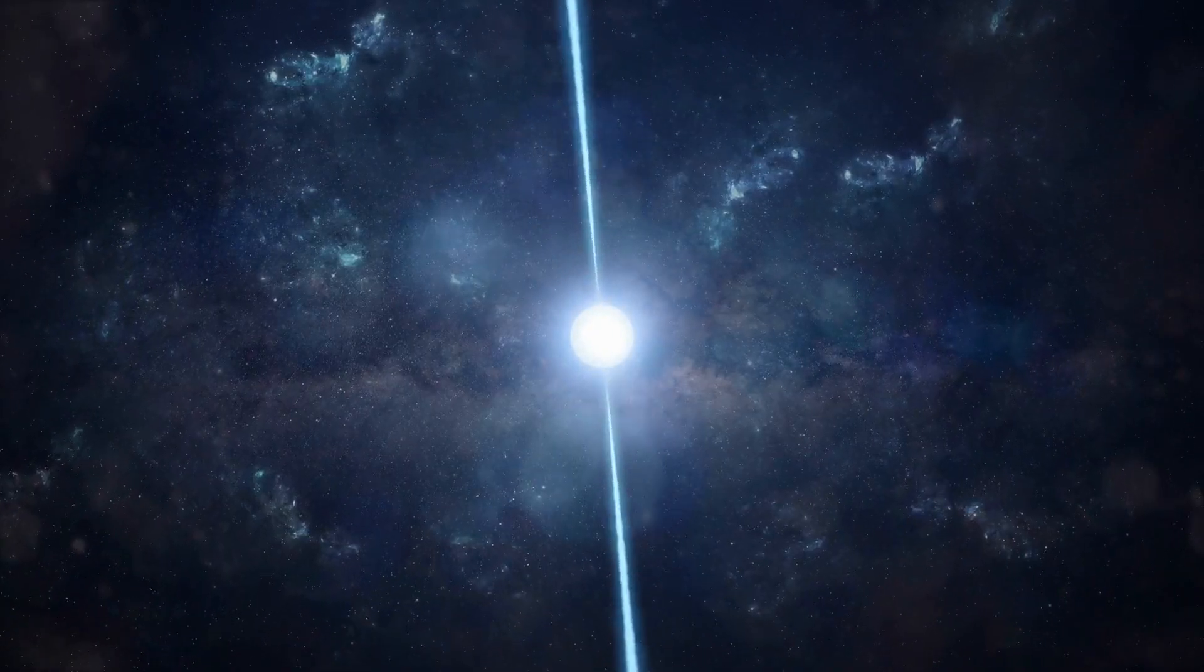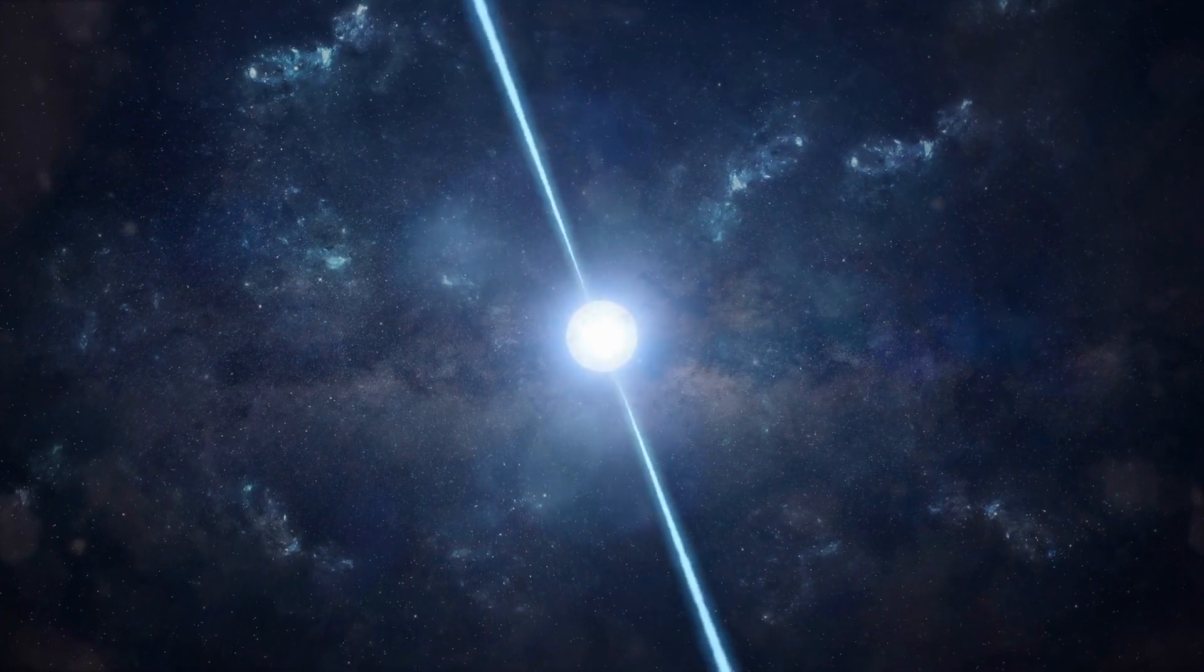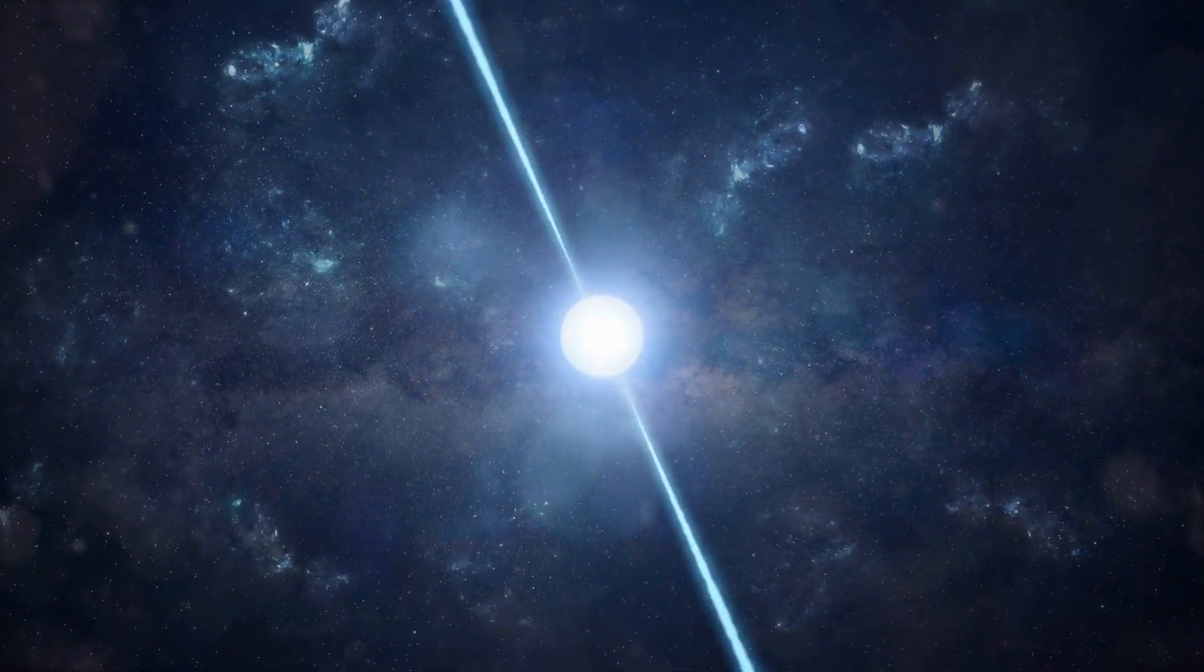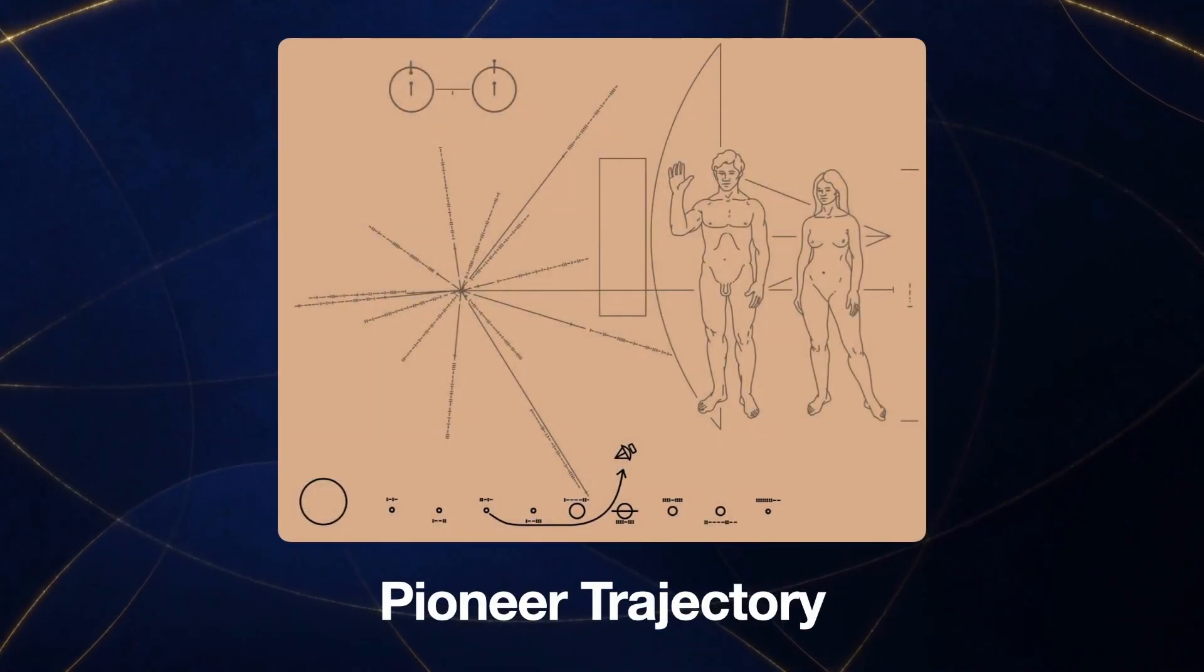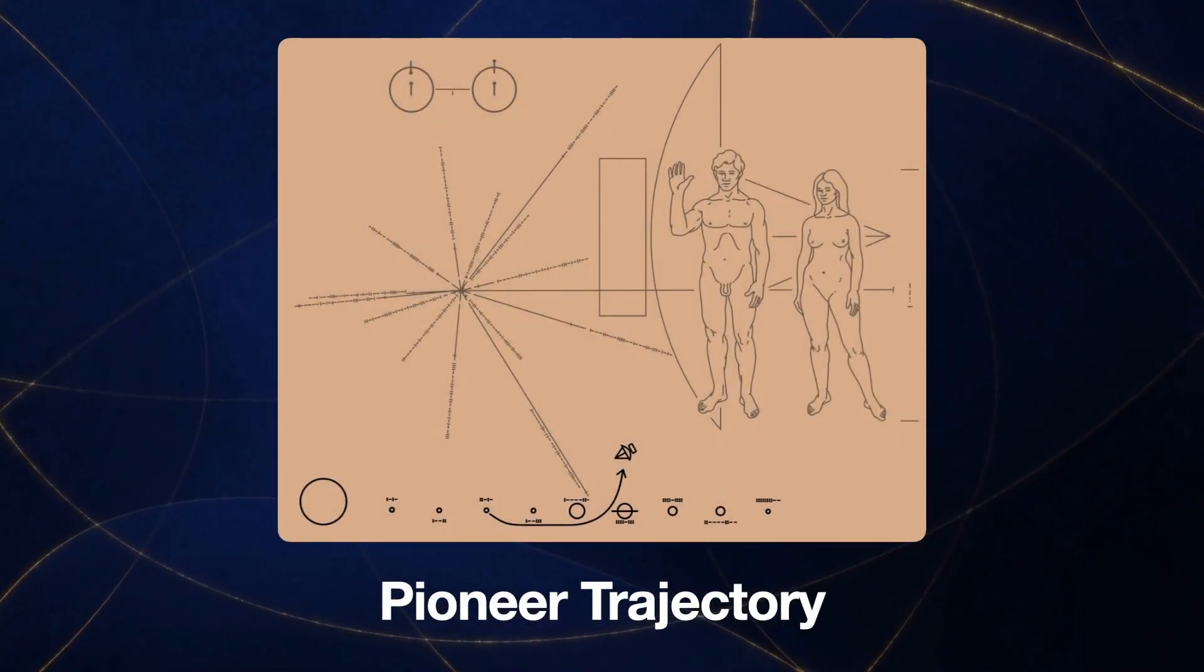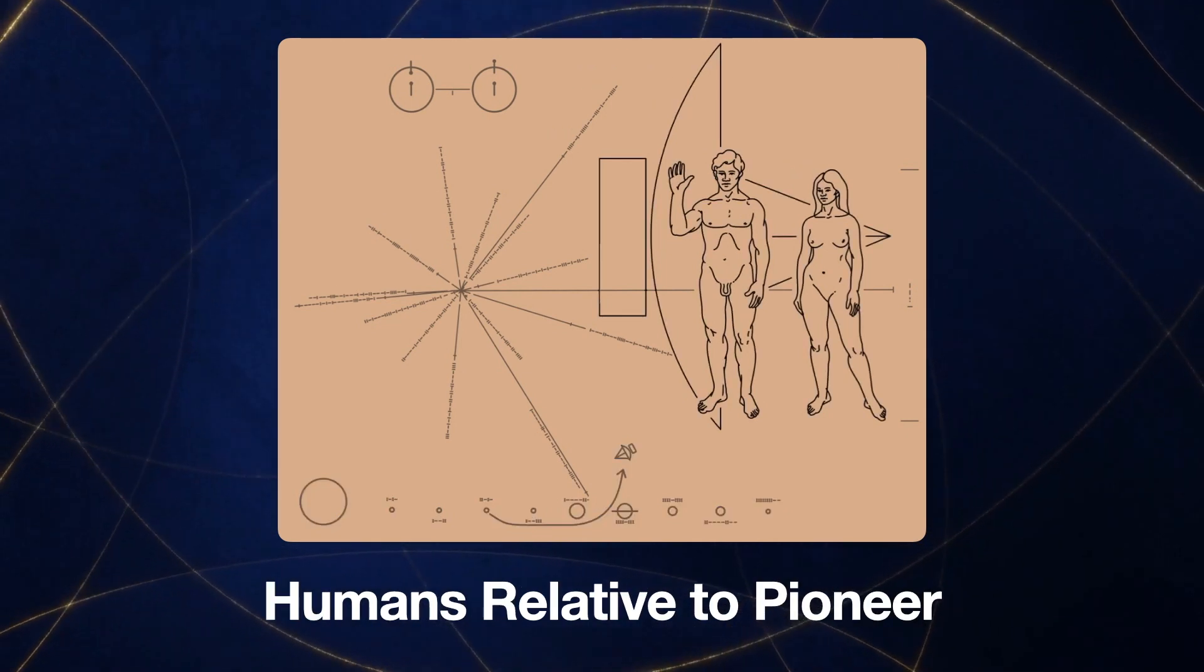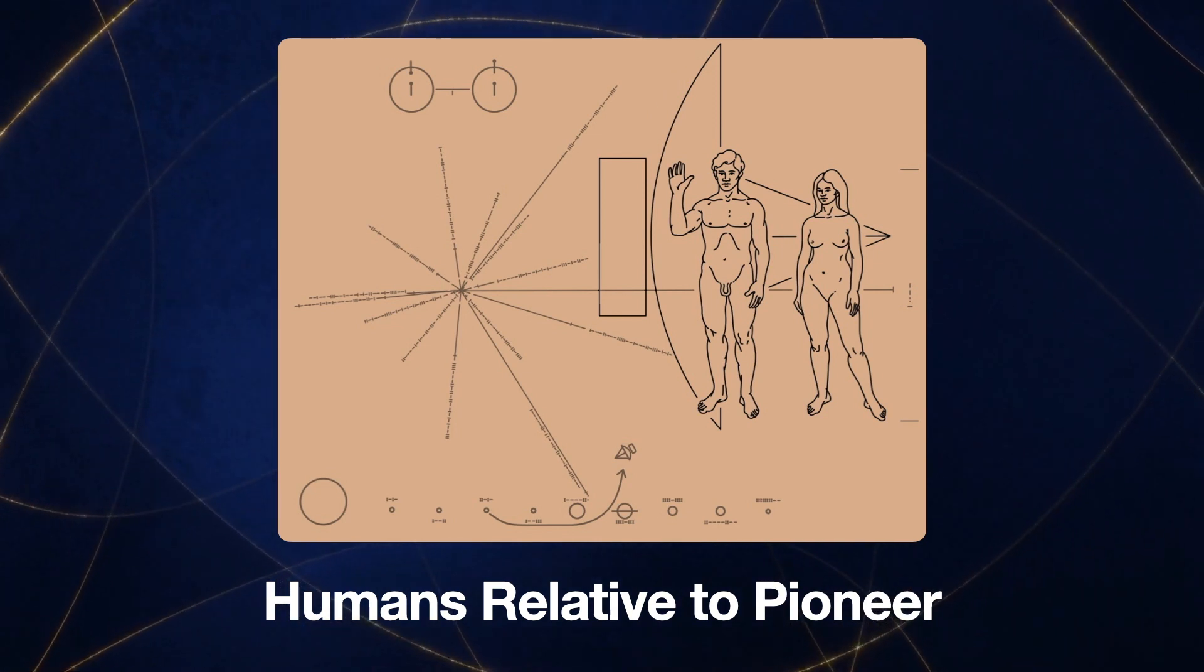If an extraterrestrial civilization found the Pioneer plaque, it would only need to observe a few of the pulsars to be able to triangulate the Sun's location and determine when the spacecraft was launched. Along the bottom is a map of the solar system with the trajectory of the Pioneer spacecraft. And on the right side is a male and female with the Pioneer spacecraft in the background to scale with the approximate size of humans.